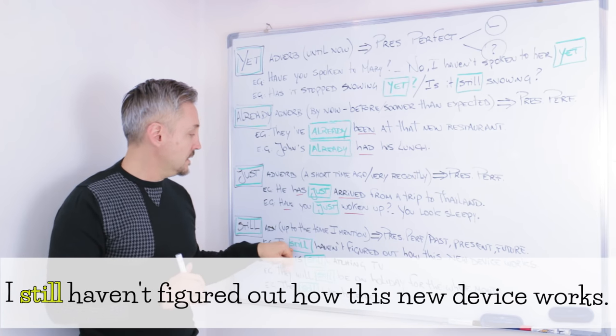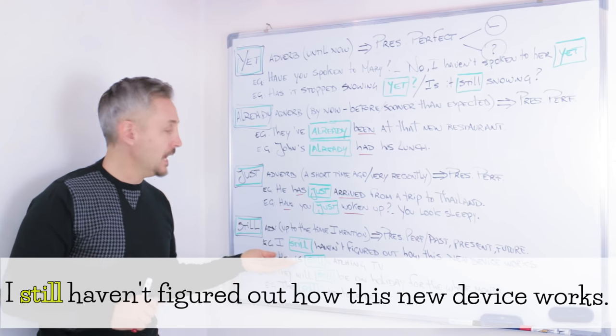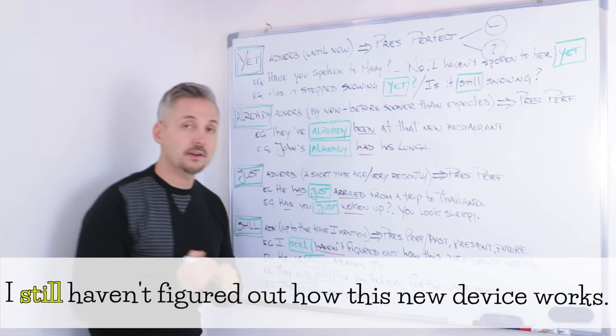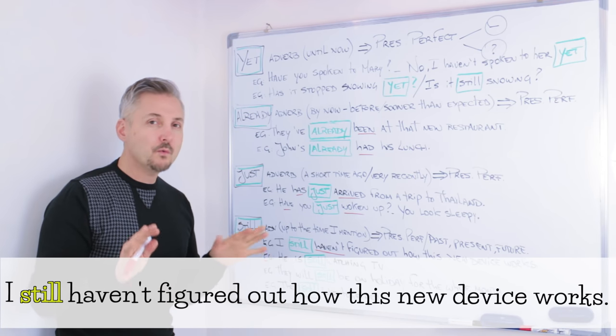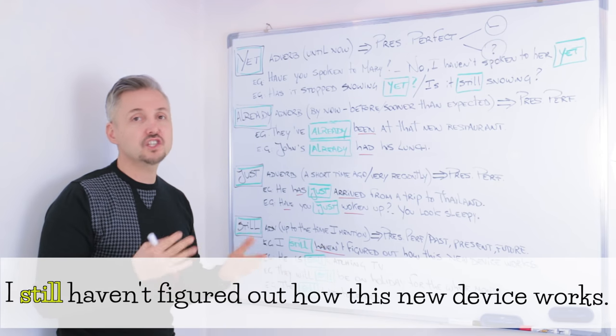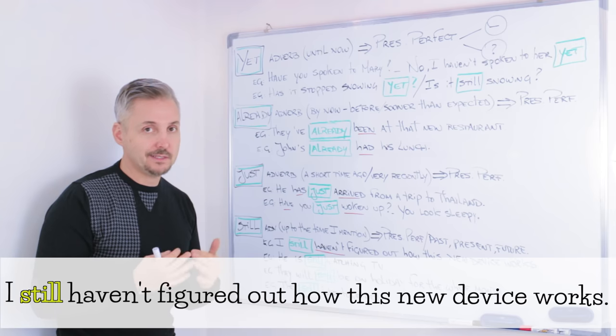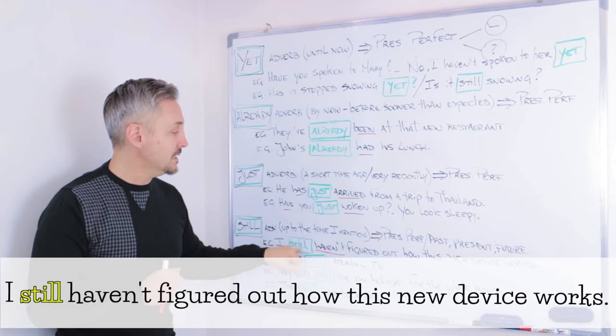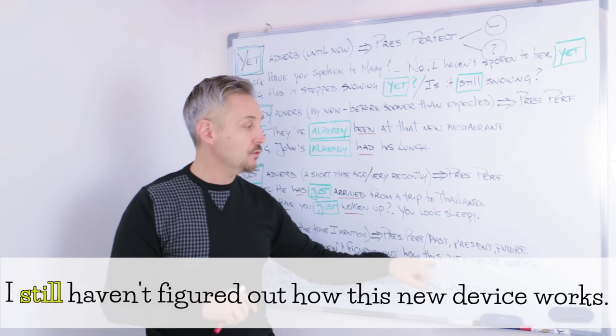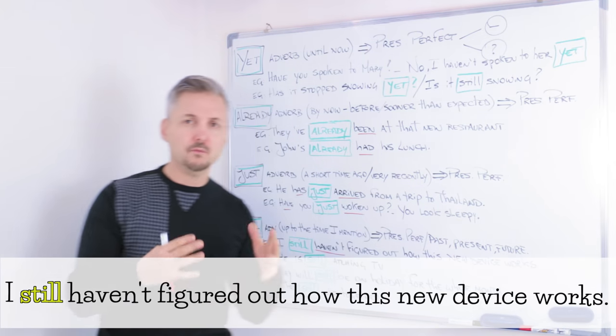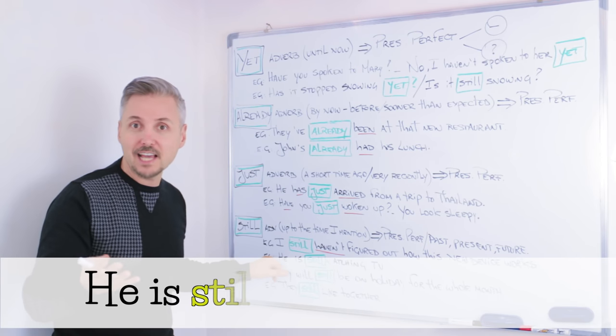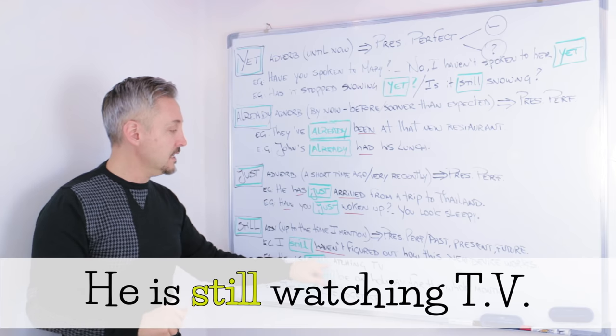I still haven't figured out how this new device works. Now, take a look at still. Where is it placed? In this case, it's placed before the auxiliary verb to have. Usually, we place it before the auxiliary have. It's just, I would say, a preference. So, I still haven't figured out, understand, how this new device works. This is what it means. Now, let's take a look at the second example with another tense.